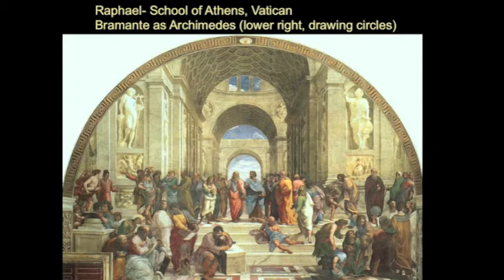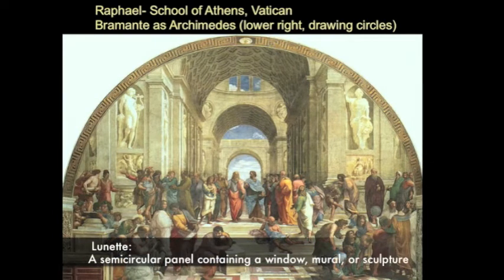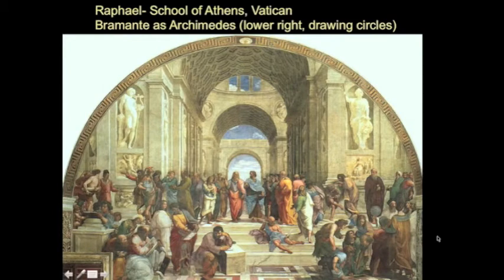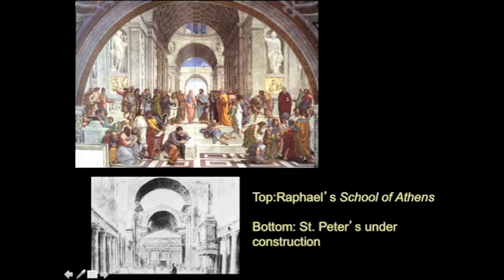In one part of the Vatican complex, Bramante was building his magnificent project of St. Peter's. In another part of the complex, Raphael was painting a series of lunettes — lunette means half-moon shaped, so the School of Athens is a lunette. And Michelangelo was painting the Sistine Chapel just next door. In the School of Athens, Raphael did two things to honor this great moment of cultural flourishing in the Renaissance. He incorporated contemporary historical characters among the great poets and philosophers of Athens, and he used the space of St. Peter's under construction as the setting for this amazing monument to culture.